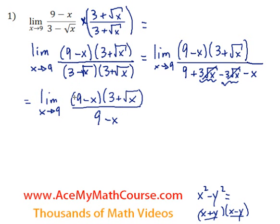At this point, we can actually cancel out the 9 minus x over 9 minus x. And we end up with the limit as x approaches 9 of 3 plus the square root of x.